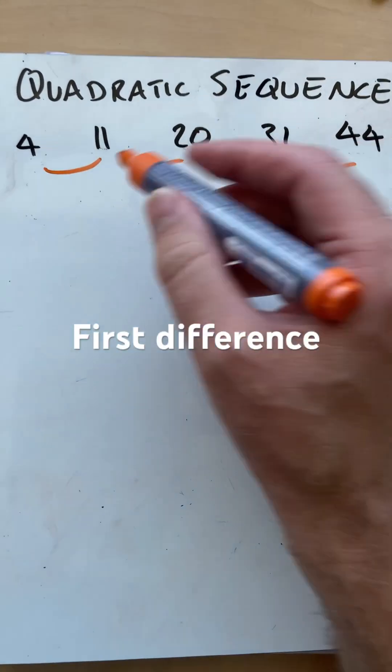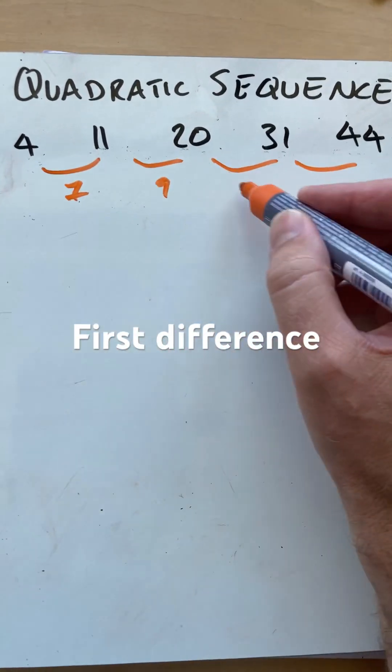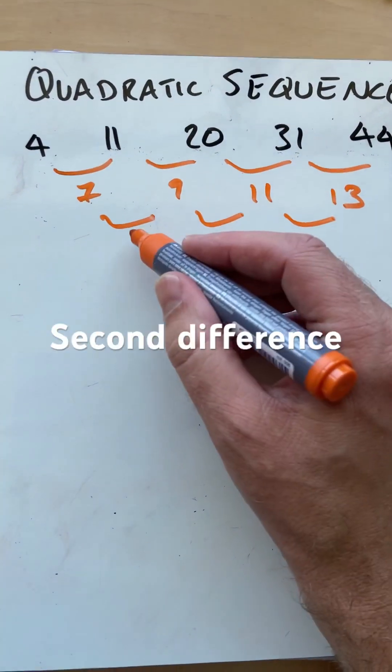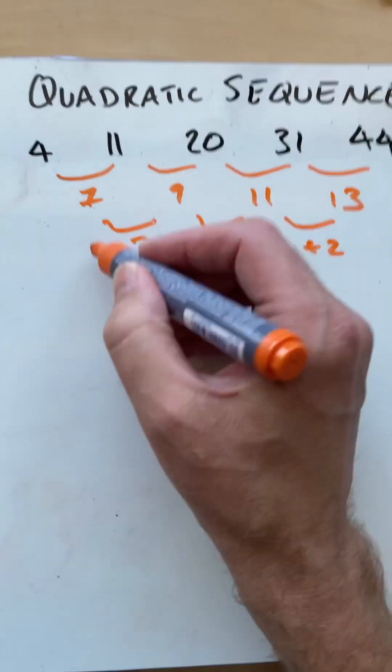First thing you do is find out the first difference, going 7, 9, 11, 13. So it's not linear. Look at the second difference, going up by 2 each time.